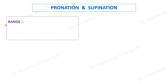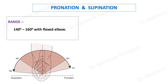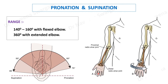Regarding the range of these movements: in the flexed elbow, supination and pronation produce 140 to 160 degrees of rotation, with supination being greater than pronation. In the extended elbow, they make 360 degrees of rotation of the forearm with the help of rotation at the shoulder joint.